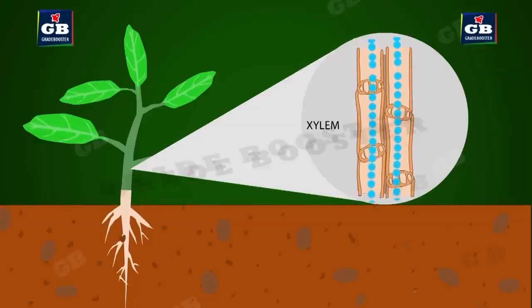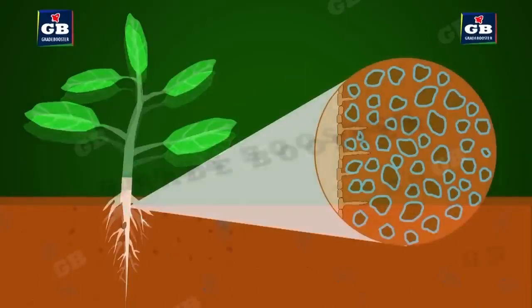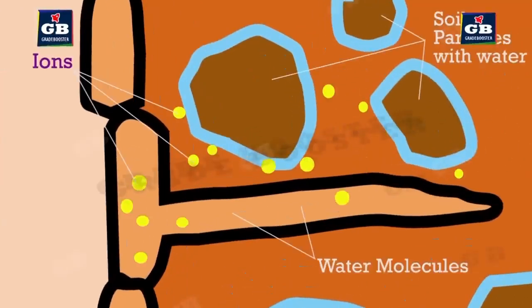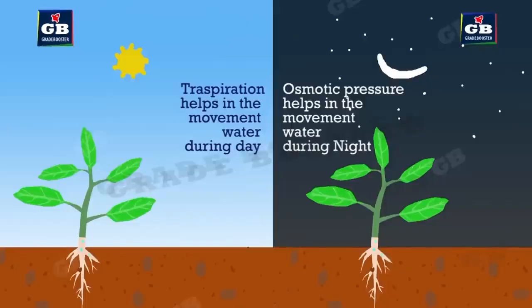Now we will see how water enters the roots. The cells of the roots that come in contact with soil actively take ions from the soil into them. Due to this active transport of ions, a difference in ion concentration develops between soil and root cells. To balance this difference, water enters the roots. During the night, the transportation of water in plants takes place through root pressure.